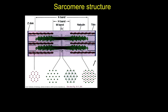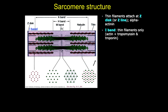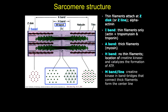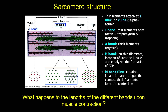Let's review the various lines and bands of the sarcomere. Thin filaments attach at the Z-discs, whose major protein component is alpha-actinin. The I-band is formed solely by thin filaments and their associated proteins, while the A-band is formed by the thick myosin filaments. The A-band is bisected by the H-band, a lighter region whose major component is creatine kinase — the enzyme that catalyzes ATP formation, critical for contraction. The M-band also contains creatine kinase, but the line itself is formed by bridges and filaments connecting the thick filaments together. Think about what would happen to the lengths of the different bands upon contraction, remembering that filament lengths do not change.